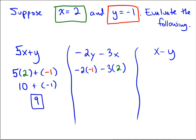But now we're back to order of operations. Negative 2 times negative 1 would be positive 2, 3 times 2 is 6, and they're being separated by a minus sign. So 2 minus 6 is going to yield negative 4.